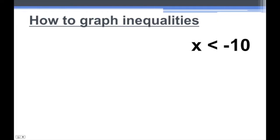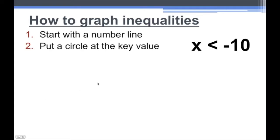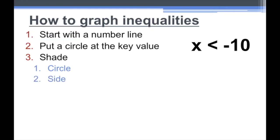So how do we graph inequalities? Let's say we have the inequality x is less than negative ten. There are three steps. Step one: start with a number line. Step two: put a circle at the key value — I like to call it the key value because it's the key to helping us set up our inequality and determine possible solutions. Step three is to shade: the circle at the key value, and the side of the circle.